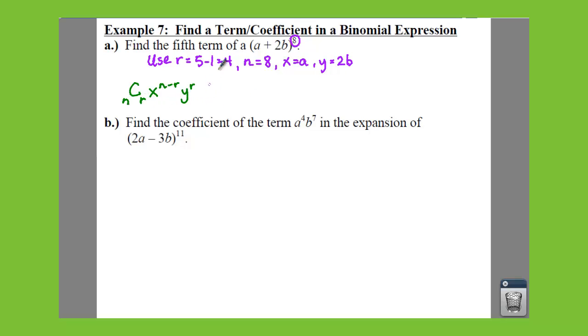So what we can do is now we can have this memorized. We can just expand this. So we're going to have 8 choose r, now r is 4, x which is an a to the power of n minus r. So we're going to have 8 minus 4 times our y to the r. So we're going to have 2b to the 4th. And that's how you fill everything in.